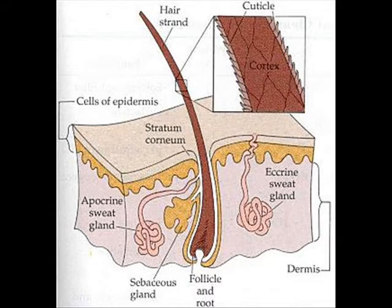If the core body temperature gets too high, hairs lie flat on the surface of the skin, providing little insulation, so more heat can be lost by convection and radiation. When the rabbit's body temperature becomes too low, his hairs are raised to trap a layer of insulating air, which reduces the heat lost from the skin.